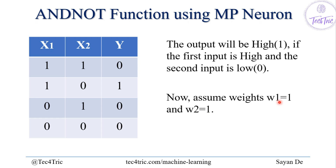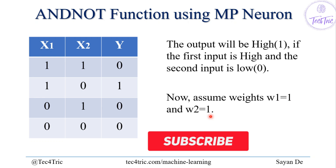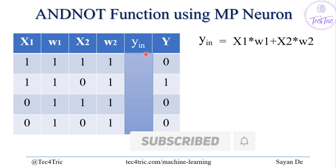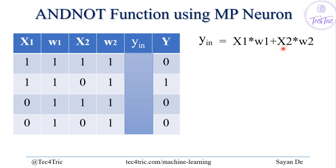Now we have to assume two weights: w1 for x1 and w2 for x2. We are assuming w1 is equal to 1 and w2 is equal to 1. Now we have to calculate the net inputs using the formula: y_input = x1 * w1 + x2 * w2.